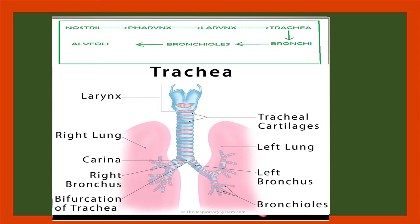The larynx leads to the trachea. The trachea is supported by rings of cartilage, and the epiglottis present at the rings prevents the entry of food. The trachea then divides into two branches called bronchi, and each branch enters into a lung.